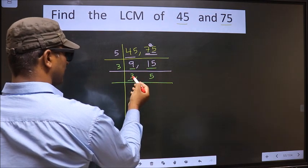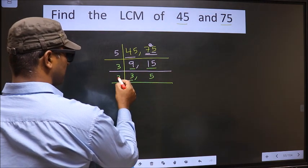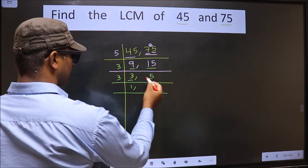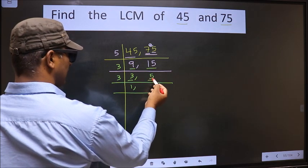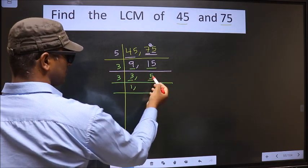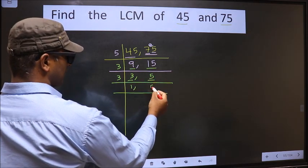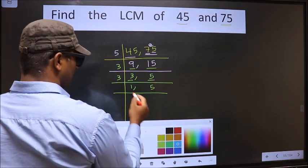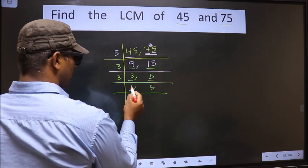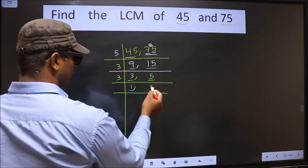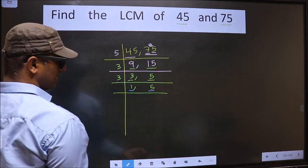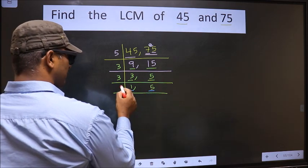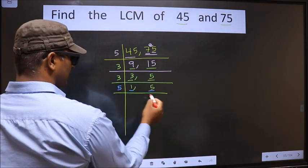Now we have 3 here. 3 is a prime number, so 3 wants 3. The other number 5 is not divisible by 3, so we write it down as it is. We got 1 here, so focus on the other number, that is 5. 5 is a prime number, so 5 wants 5.